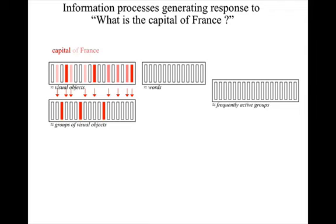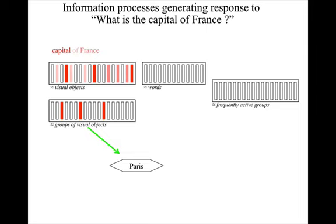So now there are a lot of receptive fields active at different levels of complexity. Each field will have a wide range of recommendation strengths. But many of them, especially in the more complex areas, will have been active in the past just before the person said the word 'Paris,' followed by positive feedback. So these columns will have acquired recommendation strengths in favour of saying 'Paris.'